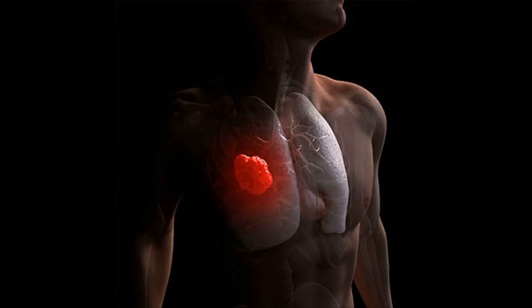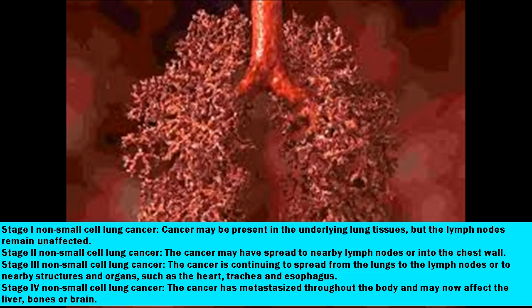Stage 0, also known as carcinoma in situ: the cancer is tiny in size and has not spread into deeper lung tissues or outside the lungs. Stage I: cancer may be present in the underlying lung tissues, but the lymph nodes remain unaffected. Stage 2: the cancer may have spread to nearby lymph nodes or into the chest wall.